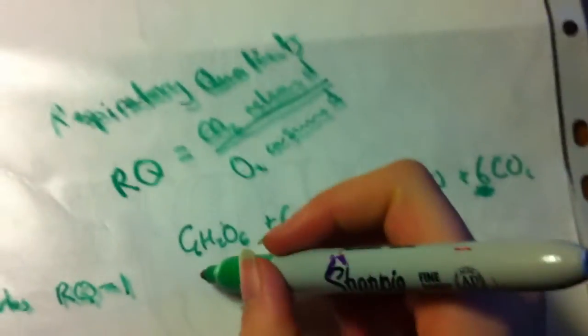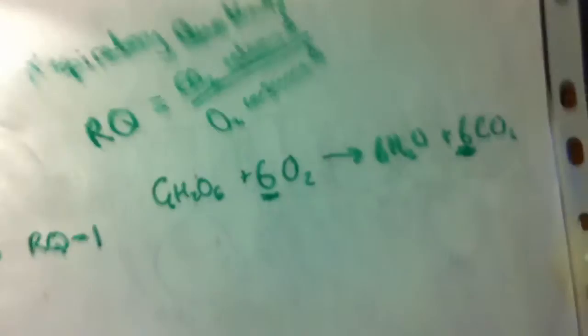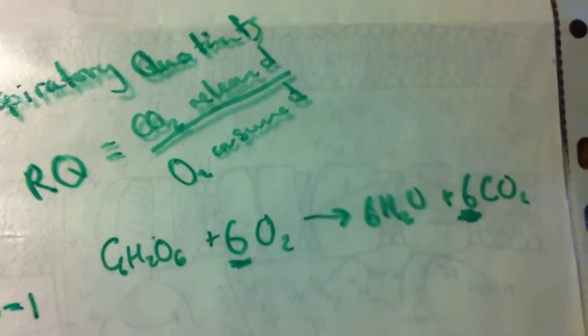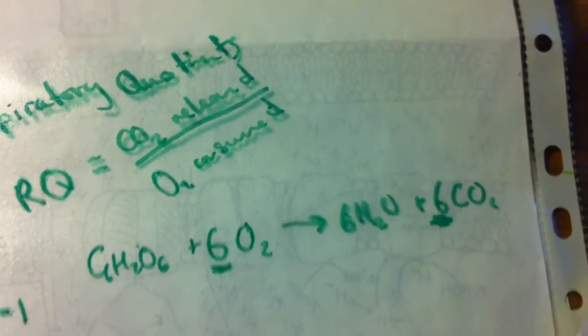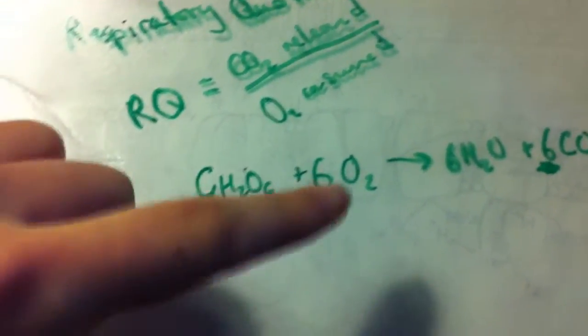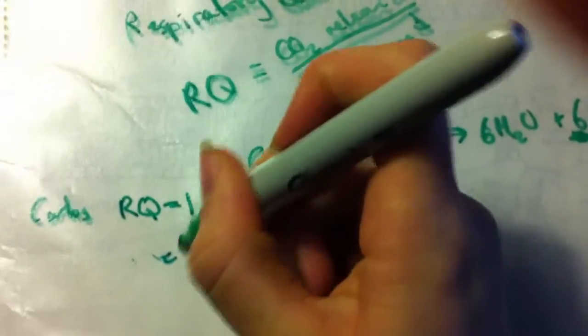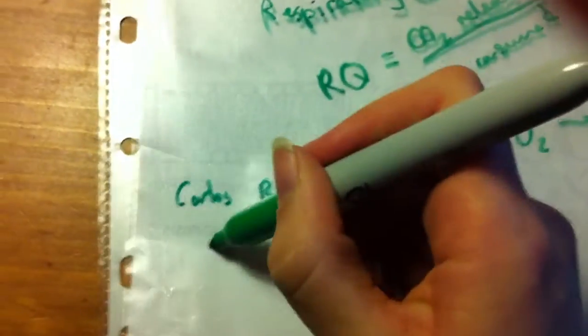Then for things like your fats, you're going to have loads of hydrogen here. So you're going to need loads of oxygen. So your oxygen is going to increase far more than your CO2 is. So you end up with a smaller number on top and a larger number on the bottom. And for fats, it's around 0.7.